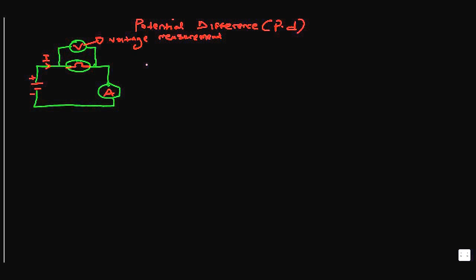You can buy a voltmeter off the internet if you've got some circuit project you're working on. An ammeter is an instrument that measures current — again, you can buy this off the internet.